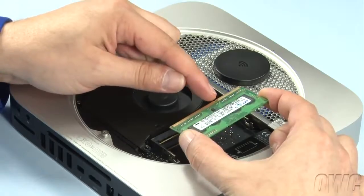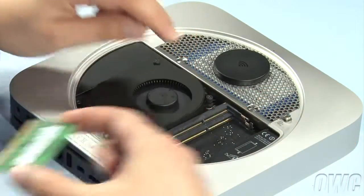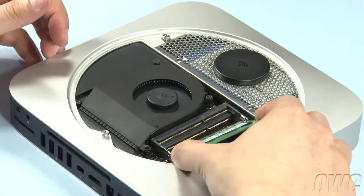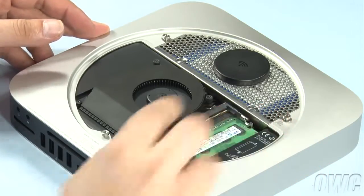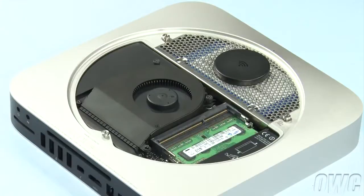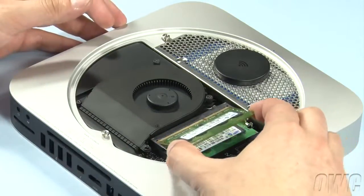The notches on the memory modules line up with the pins in the memory slots. Place the first module into the lower slot at about a 40 degree angle until it's fully seated. Then, push down on the outer edge to lock it into place. Repeat the process for the top module.